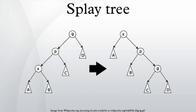Each particular step depends on three factors: whether X is the left or right child of its parent node P, whether P is the root or not, and if not, whether P is the left or right child of its parent G.